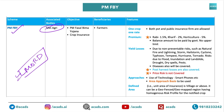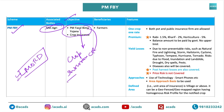Another thing you need to know about any scheme is its objective. PM Fasal Bima Yojana — 'Fasal' is crop and 'Bima' is insurance. So this scheme is all about crop insurance. The beneficiaries are obviously farmers. Now coming to the main point — the most important thing is this box: Premium.